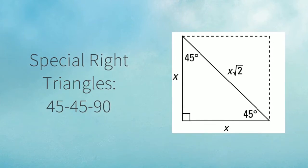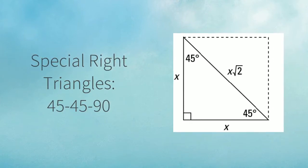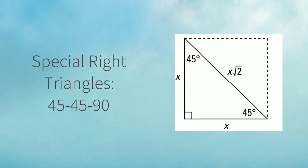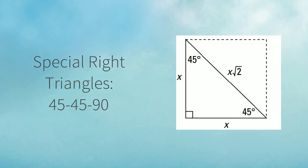As you can see, both legs have a side length of x, and then the hypotenuse is x root 2. They can find this by using the Pythagorean theorem.